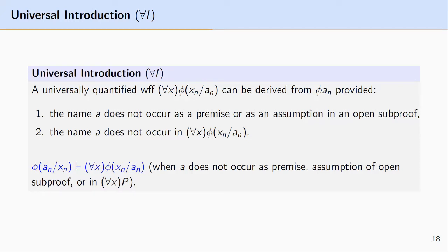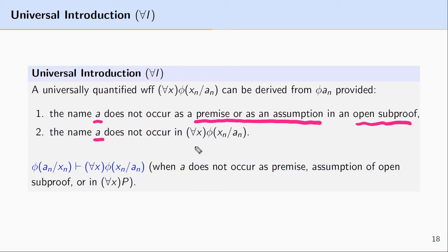In this video I'll introduce universal introduction, a derivation rule for predicate logic proofs. Universal introduction is a rule that says we can reason to universally quantified formulas. These types of formulas can be derived from formulas that contain names, provided we meet certain restrictions. These restrictions are that the name we're using does not occur as a premise or as an assumption in an open sub proof, and the name does not occur in the resulting universally quantified formula.